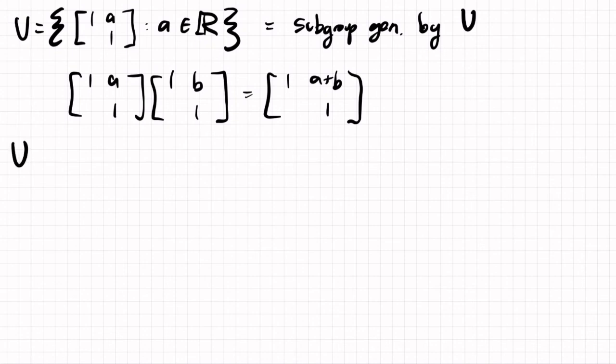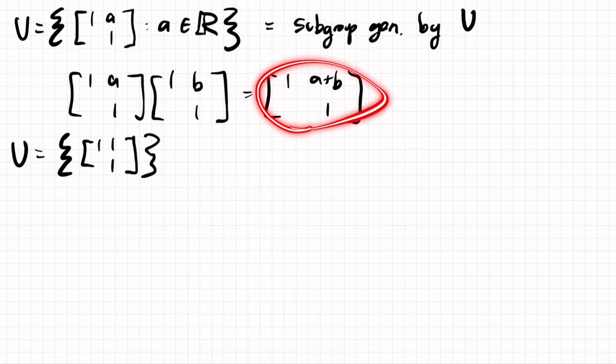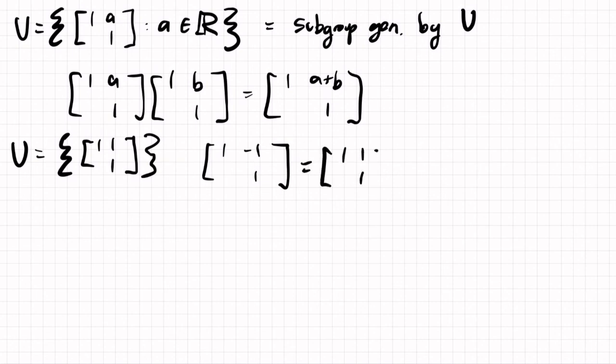One last example. Take the single matrix [1, 1; 0, 1]. By the same computation, I can take the inverse and get [1, -1; 0, 1].